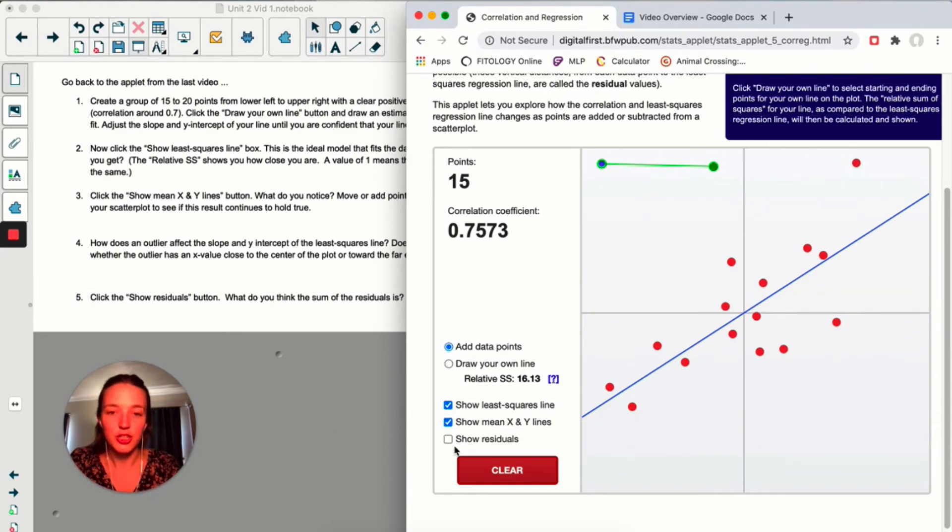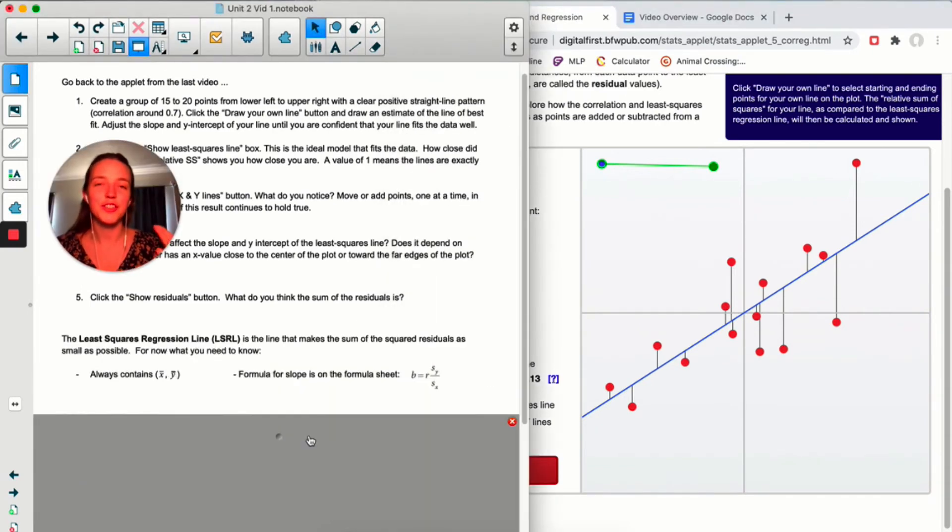The last thing I want you to look at is the show residuals button. Now this will draw in each residual for you. You can see that for many values, the line under predicted, and for several values, the line over predicted. If you guessed that the sum of the residuals was zero, congratulations. I don't have a prize for you, I'm sorry. The least squares line is designed so that the sum of the residuals is zero.